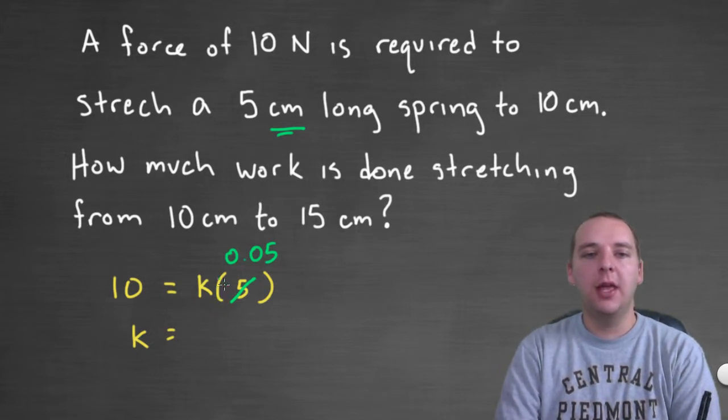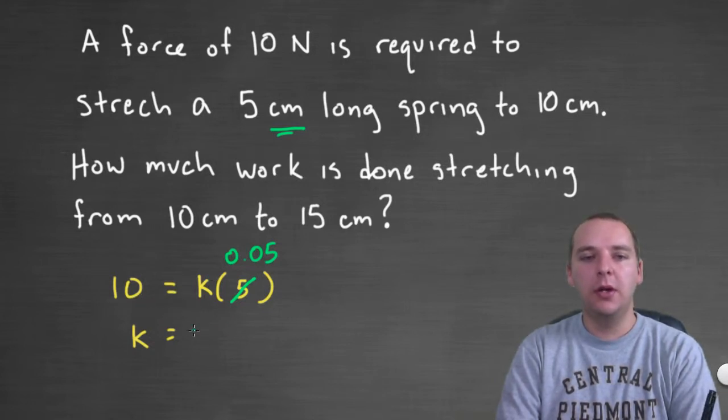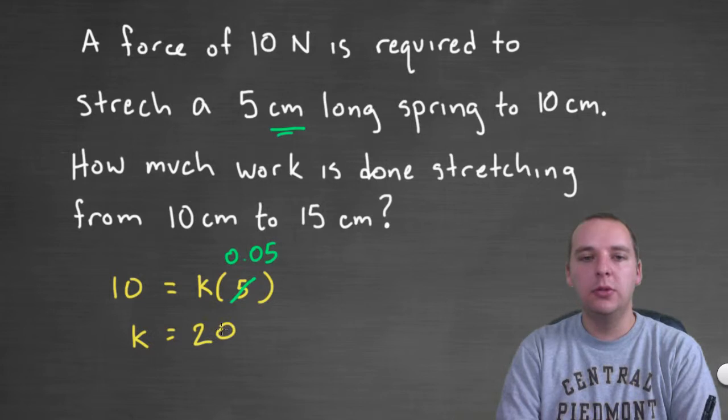Okay, so solve for k, by dividing both sides by 0.05, I'll let you do that scratch work on your paper there, but I believe this would wind up being 200. 10 divided by 0.05, we would get k equals 200.